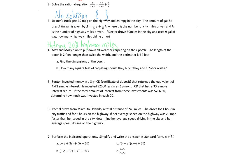For this next one, Max and Molly plan to put down all-weather carpeting on their porch. The length of the porch is 2 feet longer than twice the width, and the perimeter is 64 feet. So the length L equals 2 plus 2 times the width W. Our perimeter formula for the rectangle is 2L plus 2W equals 64.